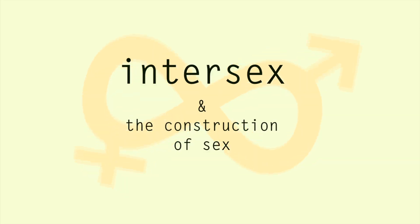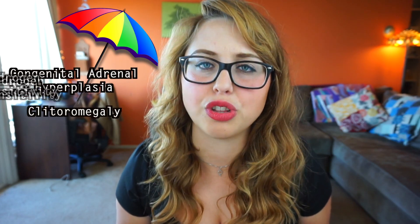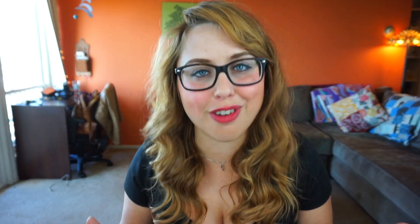But as it turns out, there are actually more than two sexes. And that brings us to intersex. Intersex is an umbrella term used to describe people who don't fit into the typical definitions of male and female because of variations in their sex characteristics. About 1 in every 2,000 people is intersex, and there are lots of different forms of it.